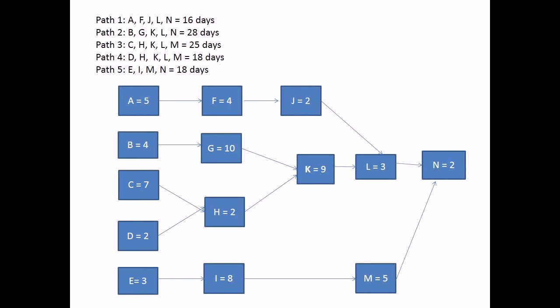In this network diagram there are five paths. Each path is identified by the arrows connecting the boxes. Each box is an activity. Each arrow is the relationship between the activities. Note the relationship between activity H and activities C and D. Activity H is dependent on both C and D. In other words, both activity C and activity D must be finished before activity H can start.